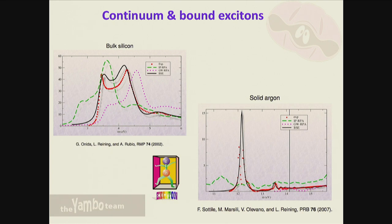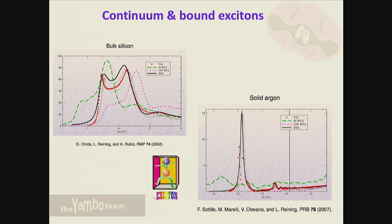It is possible to include thermal effects in the Bethe-Salpeter calculation - there are works from Andrea Marini and more recently people use a frozen-phonon approach to calculate the thermal average and compute BSE spectra including thermal effects. This is another example shown before: solid argon. If you calculate RPA this is what you obtain; GW gives an electronic gap of about 14 eV; including the electron-hole interaction gives very nice agreement with experiment. The difference of ~2 eV between the optical peak and the quasiparticle gap is the excitonic binding energy - quite large in argon because the screening is very small.